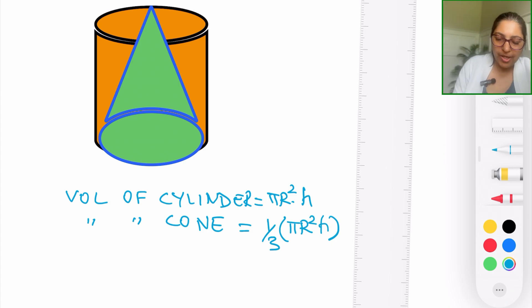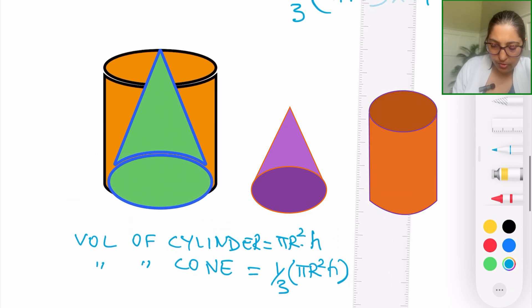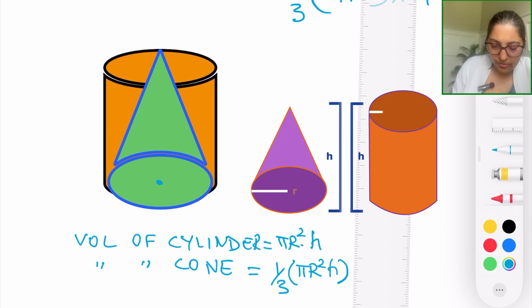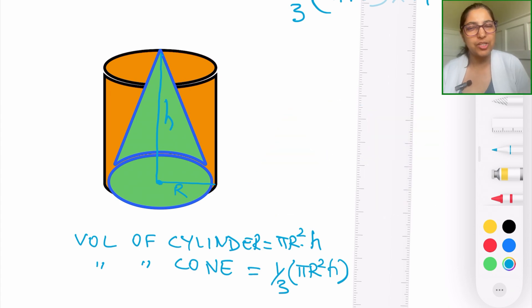But there are conditions that when is this one-third rule applicable. When the base radius, I've tried to align them as much as I could here, the radius of those base shapes of both the cone and the cylinder are the same, and they have the same height as well.